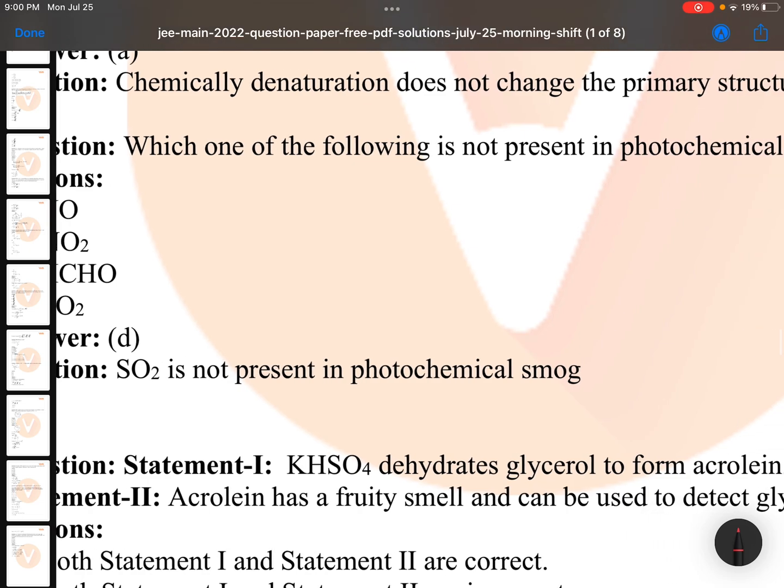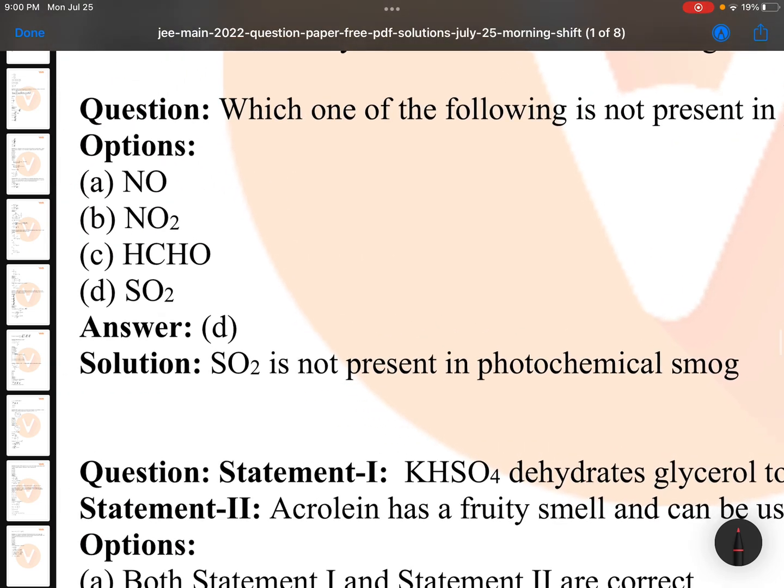Which one of the following is not present in photochemical smog? This is very regular question. Don't forget to read photochemical smog in NCERT first year environmental chemistry. Answer is SO2 here.